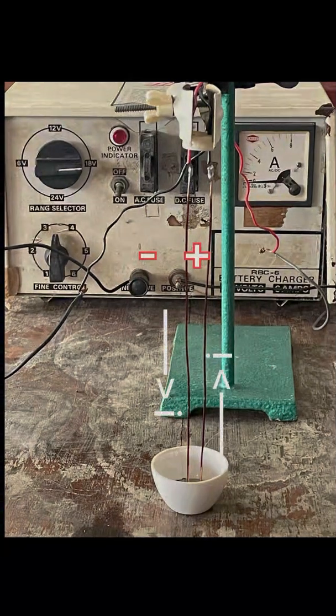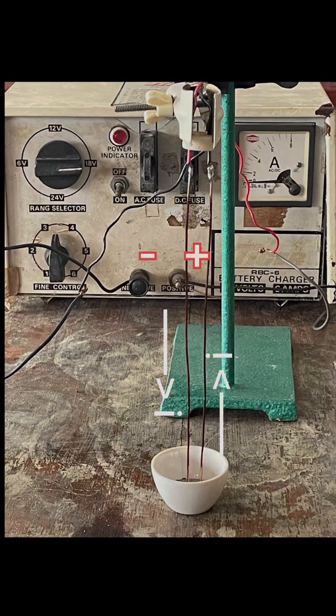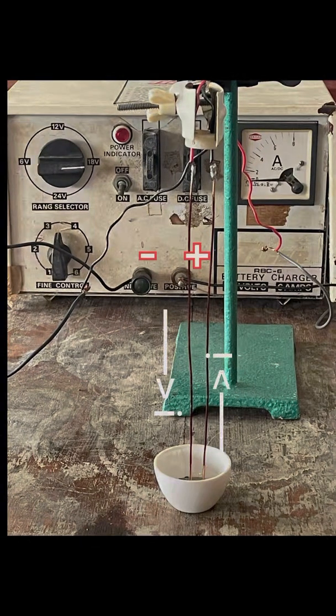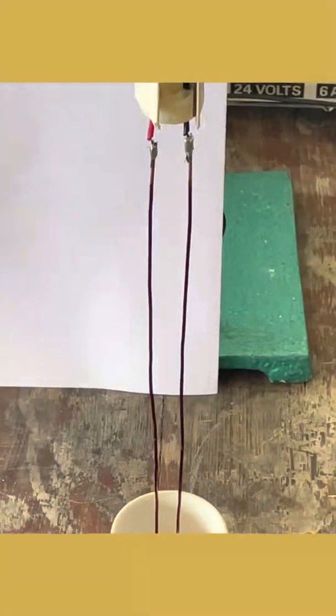The free ends of the wire are immersed in mercury taken in a dish, and the other ends are connected to the power supply. A maximum of 6 ampere is flown through these two wires.